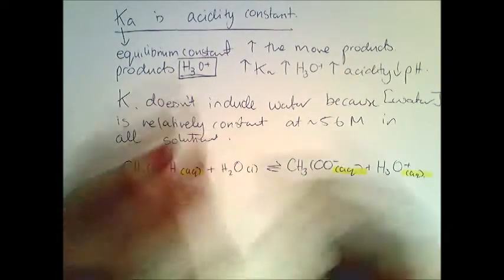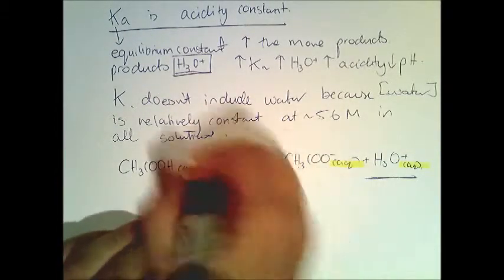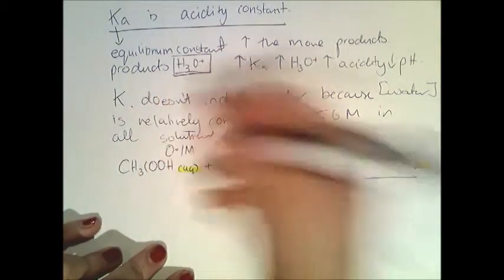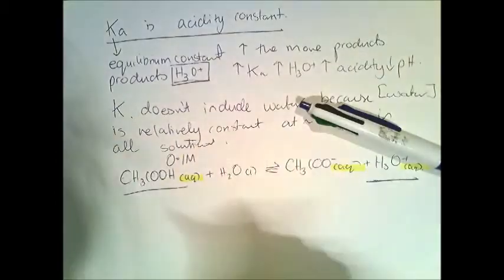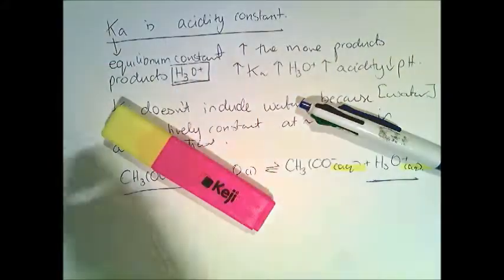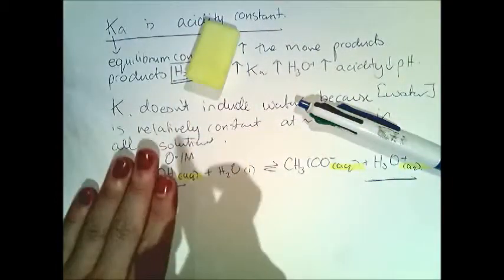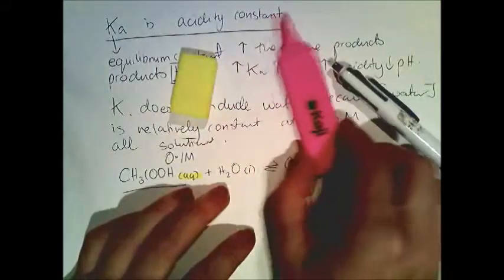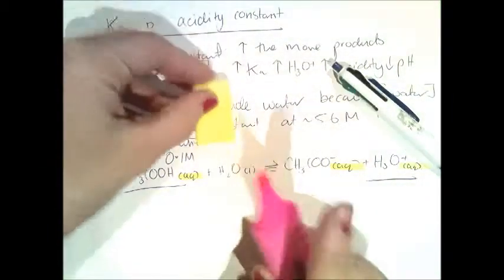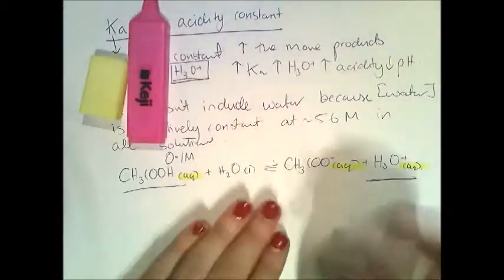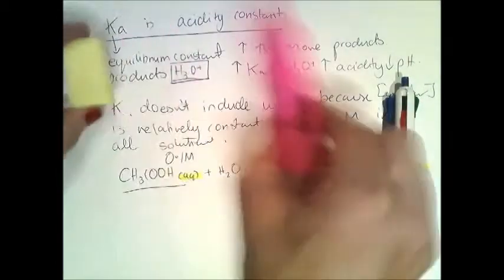We want to find the concentration of H3O+ because this gives us a direct route to pH — we just do negative log of that. If we're given 0.1 molar acid added to water, the acid reacts with water donating H to form H3O+ and the conjugate base CH3COO minus. As each molecule breaks up into one H3O+ and one conjugate base, these concentrations must be equal.